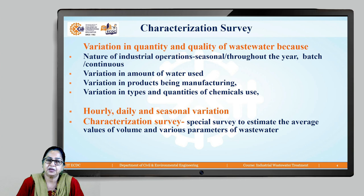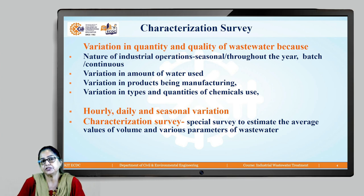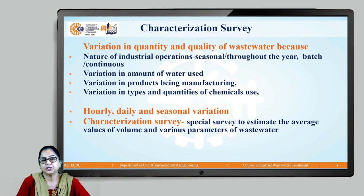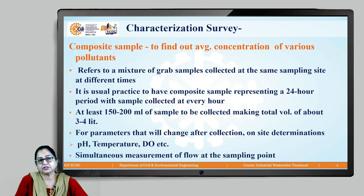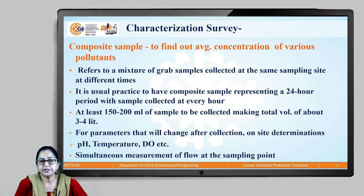This variation can be hourly, daily, and even seasonal. And hence, to understand the characteristics of wastewater for any industry, the very first step is to conduct a characterization survey. It is a spatial survey done to estimate average volume and average values of different parameters related to wastewater. So to do a characterization survey, we do composite sampling.